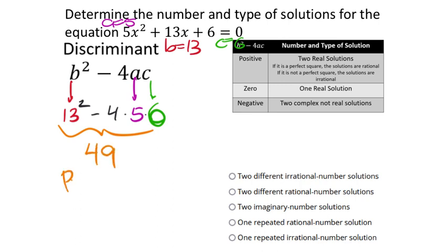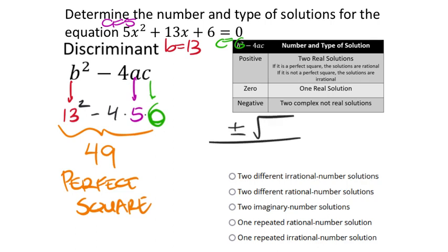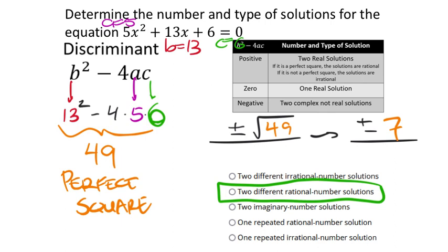49 is a perfect square, which means in the quadratic formula you'd have plus or minus the square root of 49. The square root of 49 is 7, and 7 is rational, which means the solutions are rational. So we have two different rational number solutions.